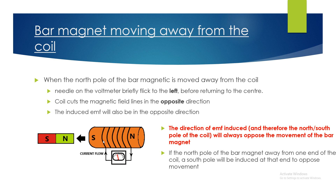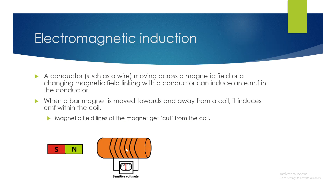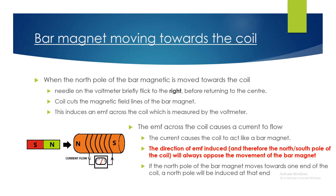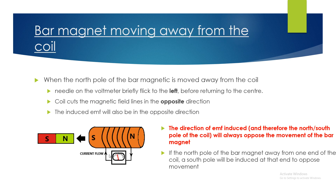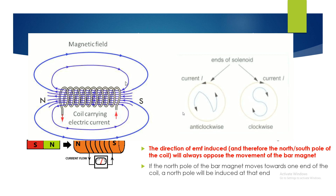If you want to figure out the actual direction of current, you can backtrace from what you already know. When the magnet was moving towards the coil, current flowed in one particular direction; when moving away, current flowed in the opposite direction. Recall from previous videos: if you have a north pole, current flow in the solenoid is anti-clockwise; if you have a south pole, current flow is clockwise. So you can backtrace the current direction from the induced pole — check the previous videos on how current within a solenoid induces a certain magnetic pole.